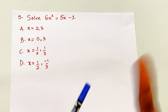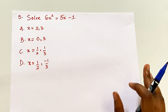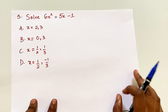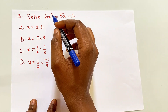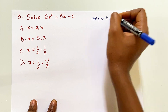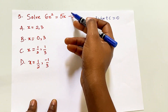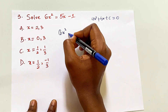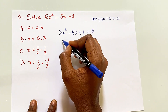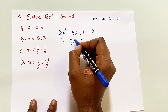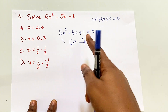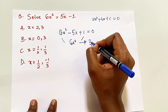Question number 3 asks us to solve a quadratic equation. There are two common ways: the factorization method or the formula method. Here I'll use factorization. The equation doesn't look like a quadratic at first because there's no zero on the right, but we move all values to the left to get 6x² - 5x + 1 = 0. To factorize, multiply the first and last terms: 6x² × 1 = 6x². We look for two values that multiply to give 6x² and add to give -5x. Those are -3x and -2x.